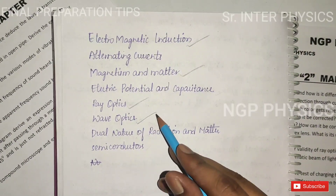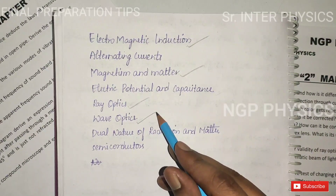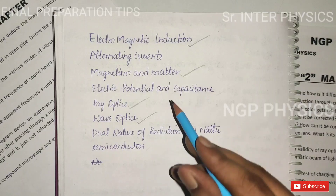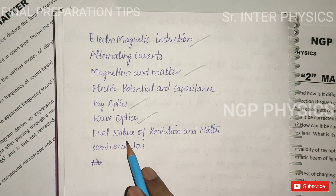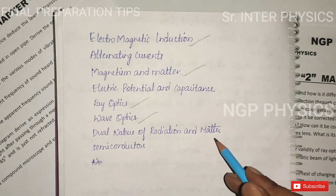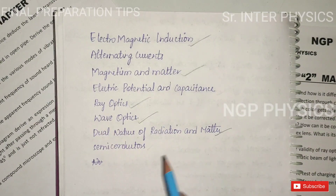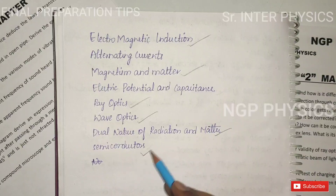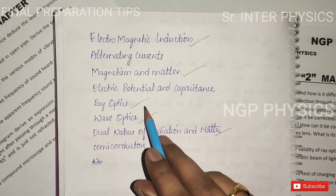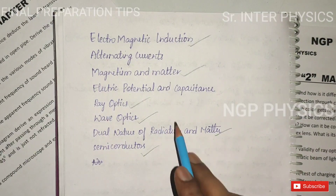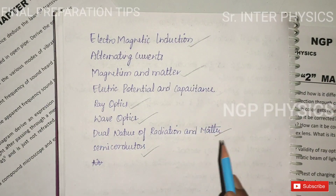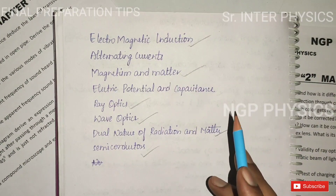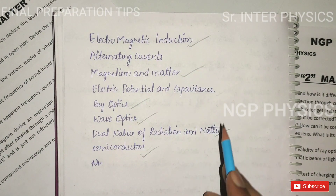The next one is Wave Optics — this is the 4th practical. Then Dual Nature of Radiation. The last chapter is semiconductors, covering 6 chapters.